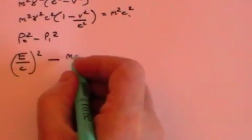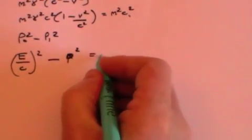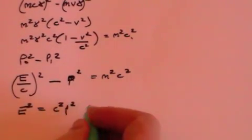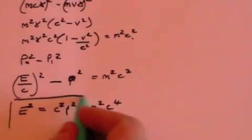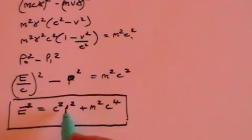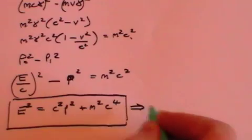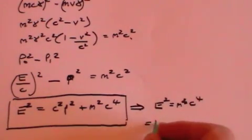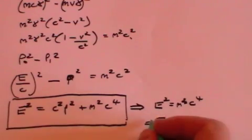What is p0 squared minus p1 squared in physical terms? p0 squared is energy over c, all squared, and p1 squared is momentum p squared. And that equals m squared c squared as we just calculated. Multiplying through by c squared, we find that E squared equals c squared p squared plus m squared c to the fourth. This is the general relation for energy when you have momentum. If momentum is zero — if the object is not moving — this reduces to E squared equals m squared c to the fourth, or by square-rooting both sides, the famous equation E equals mc squared.